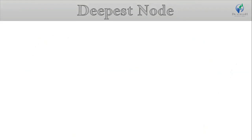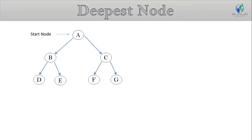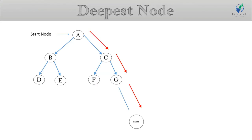Next point: DFS follows the path node to find a path. If we have node A as start node and follow A to C, and C to G sequence to find the goal node, DFS follows this sequence until it reaches the last node or goal node. This is called the path node sequence.